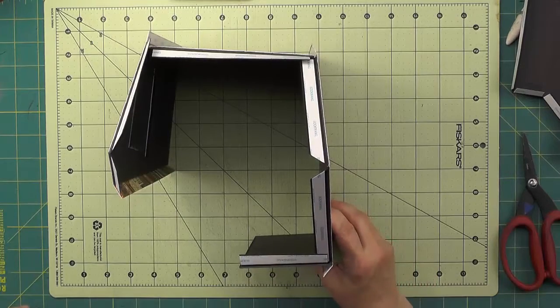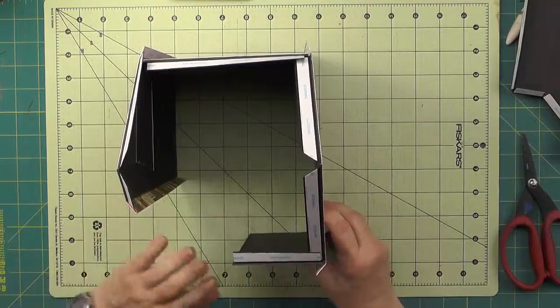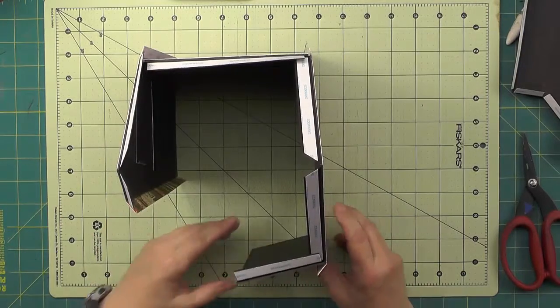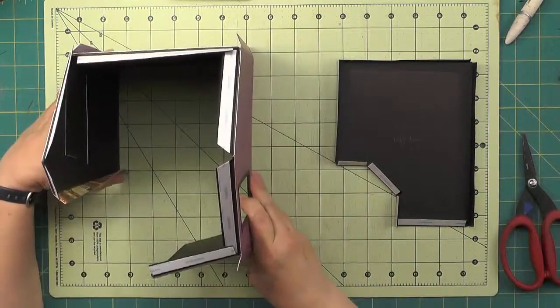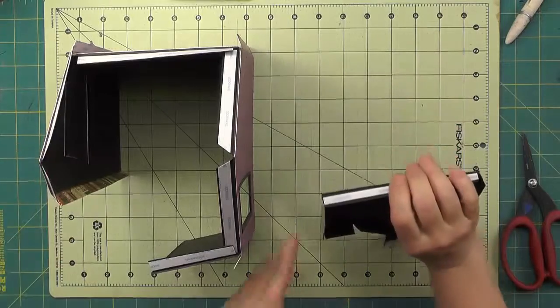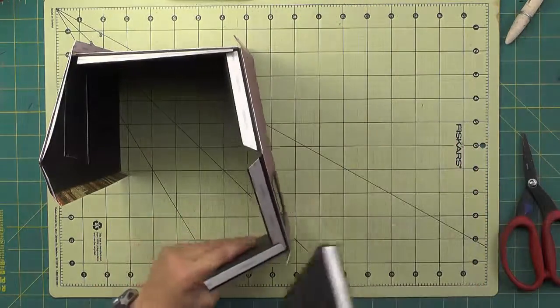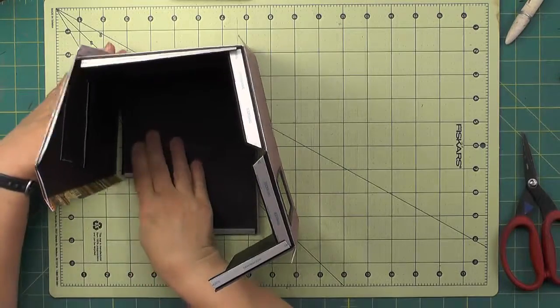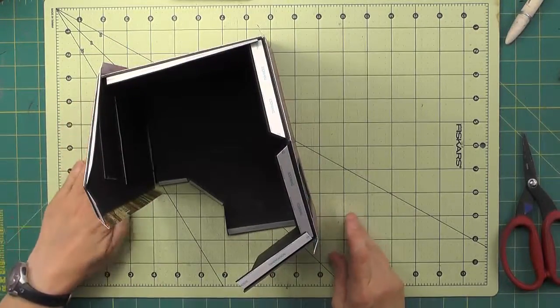I have my four walls joined now and oriented with the front wall towards me. Now I'll bring in my base. As you recall, we have already added joining strips to the inside edges of this base.